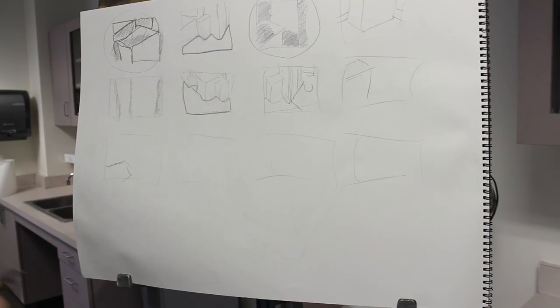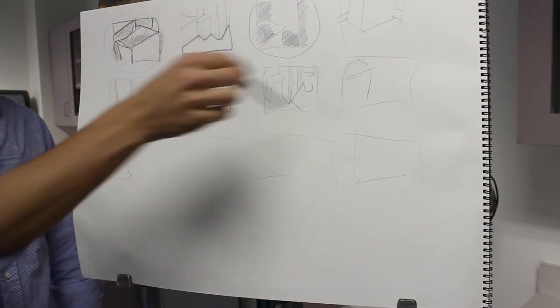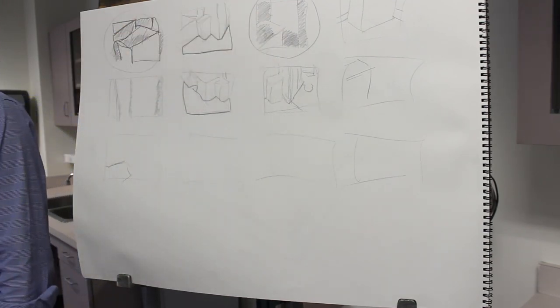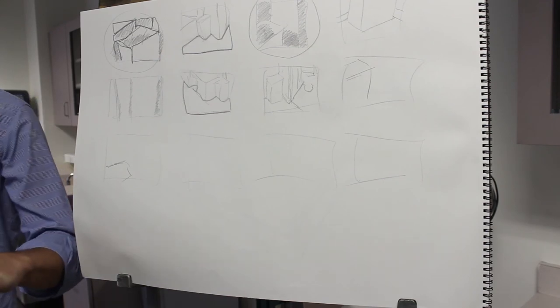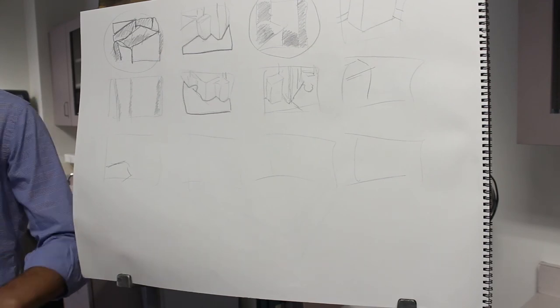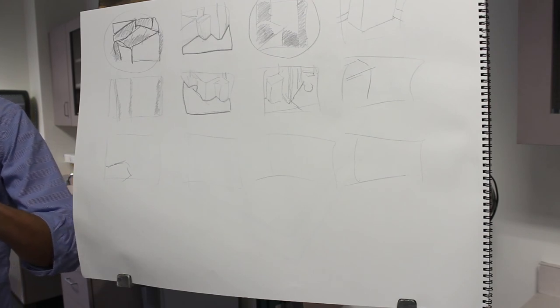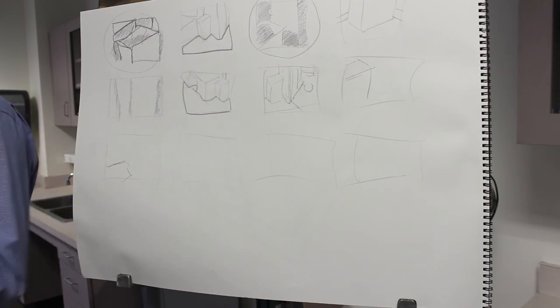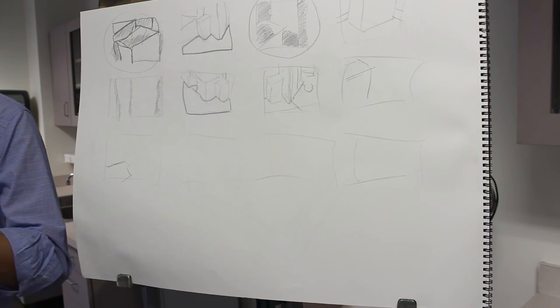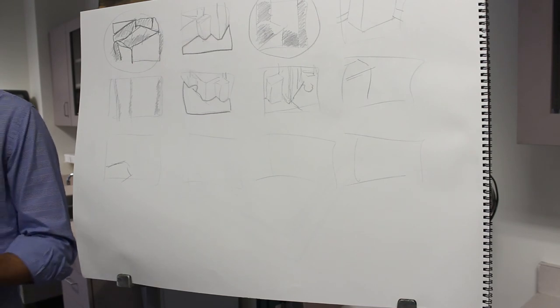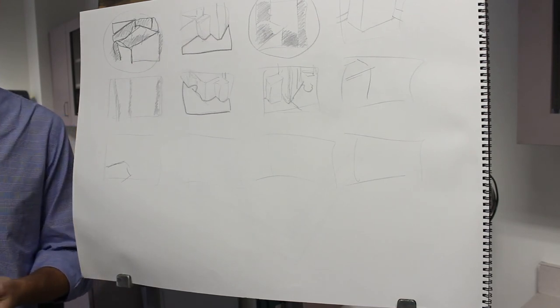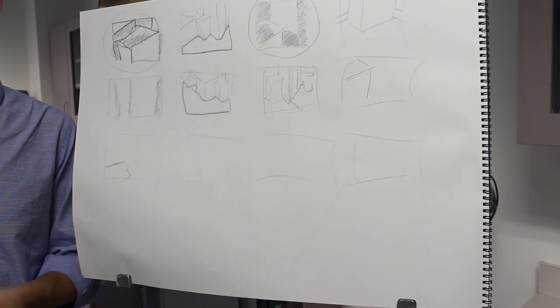So what this does is this basically determines all of your compositional decisions. So by the time you scale it up big, you're already done with the composition. The five by seven, you choose all of the value relationships. So you no longer have those decisions to make when you go to the big.